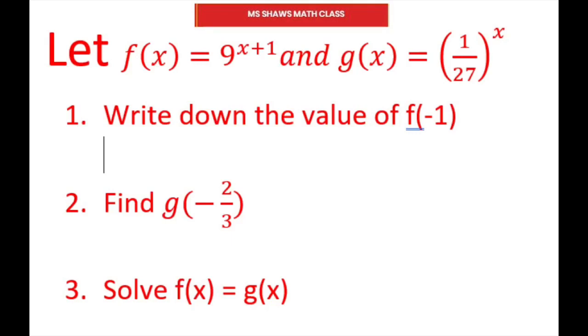The first question is write down the value of f of negative 1. So this is your f. I'm just going to do that right here. You have 9 and the x is negative 1, so I put negative 1 plus 1. That equals 9 to the 0. Anything to the 0 power equals 1.